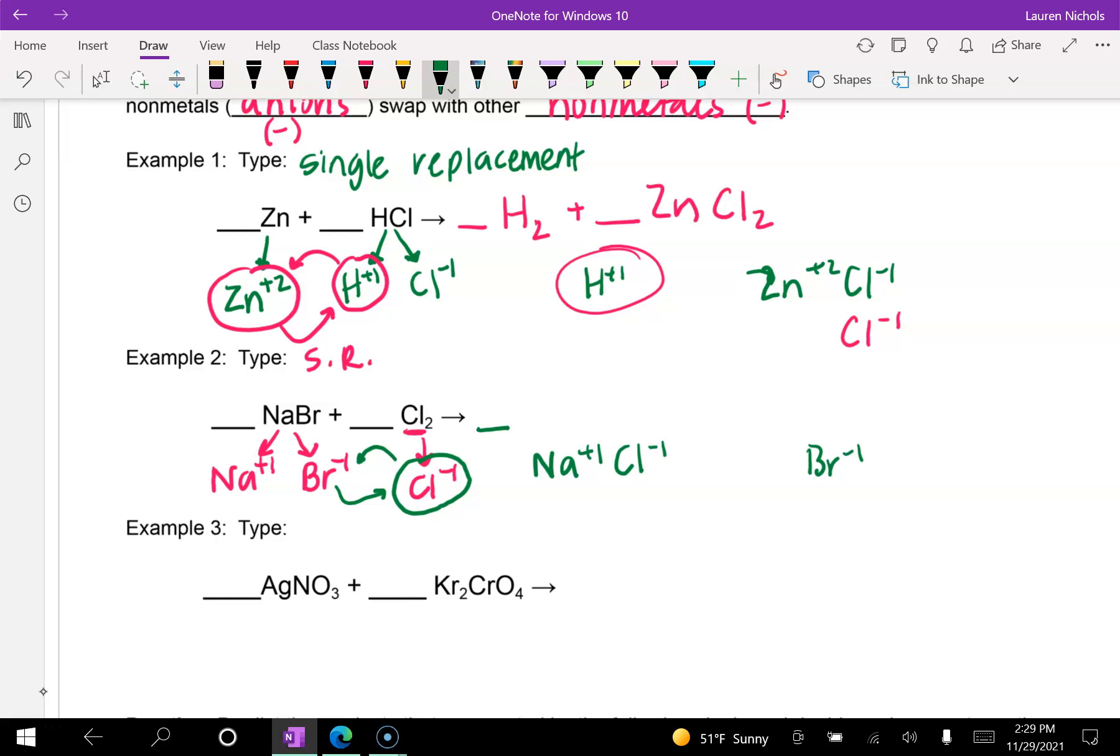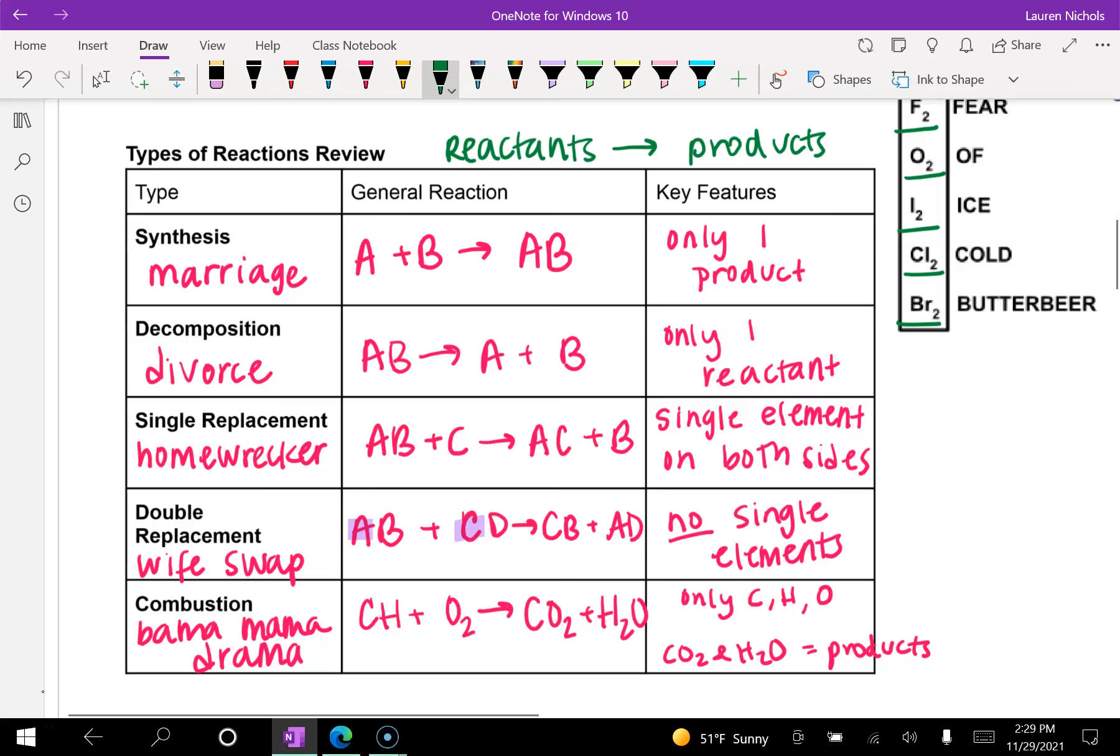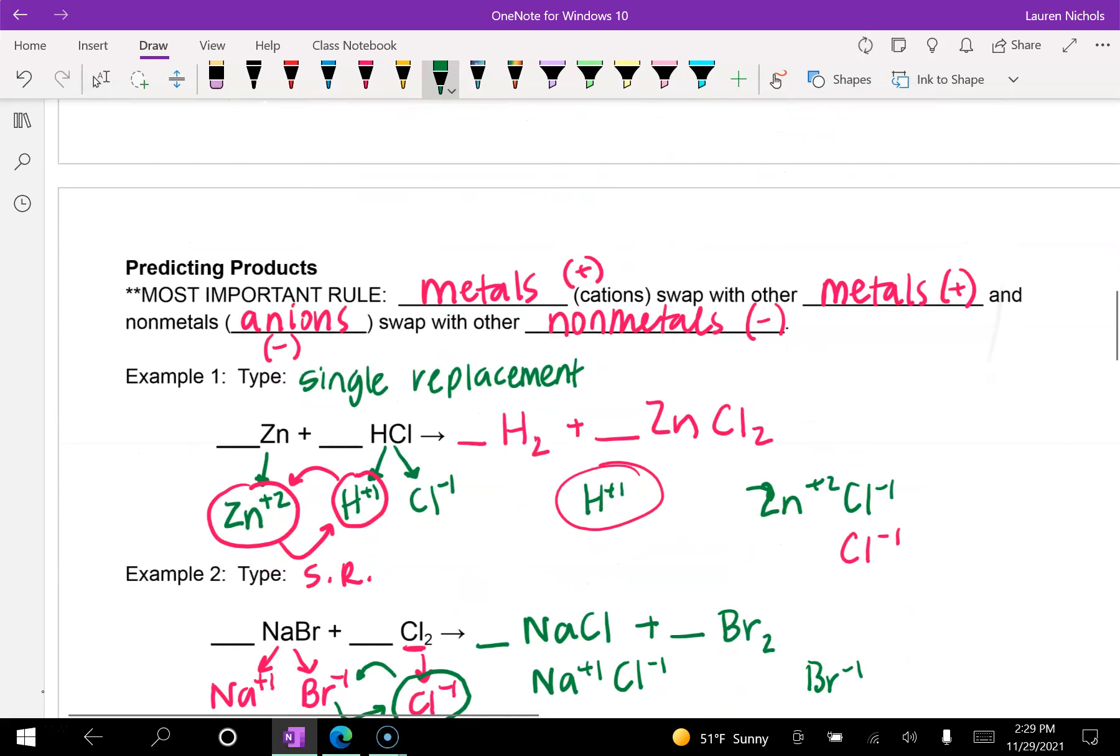So when we write our finished formulas, we'll have NaCl, because positive one and negative one balance each other out, plus Br2. Now the reason why we need the two there for bromine is because bromine is one of our diatomic elements.